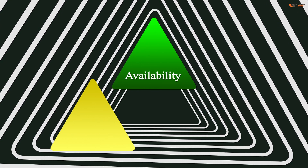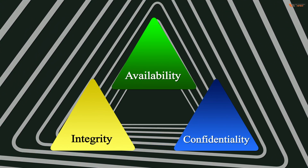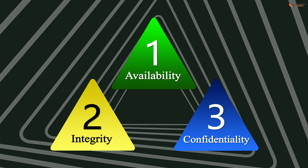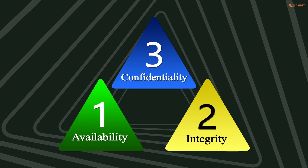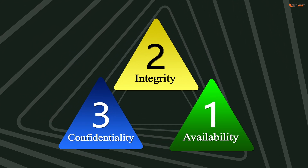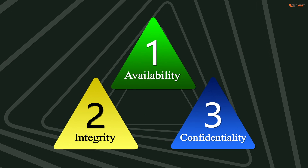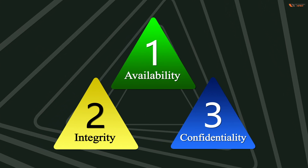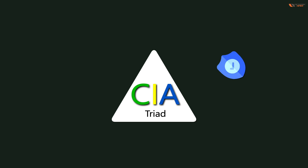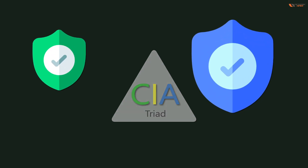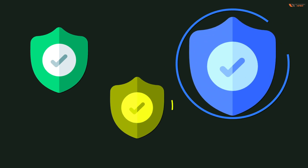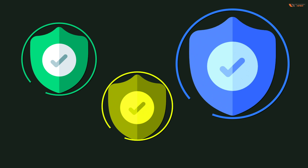The elements of the CIA triad are often described as the CIA model in industry standards. When people say that their infrastructure is CIA model equipped, what they mean is that they have safeguards in place to ensure confidentiality, availability, and integrity. This is known as the CIA model, and the fundamental objective is to achieve a secure system. If any of these factors — confidentiality, integrity, or availability — is not present, then the model is not considered secure.